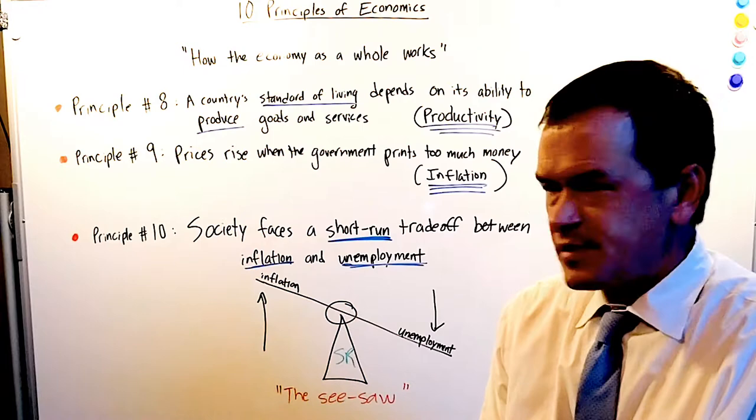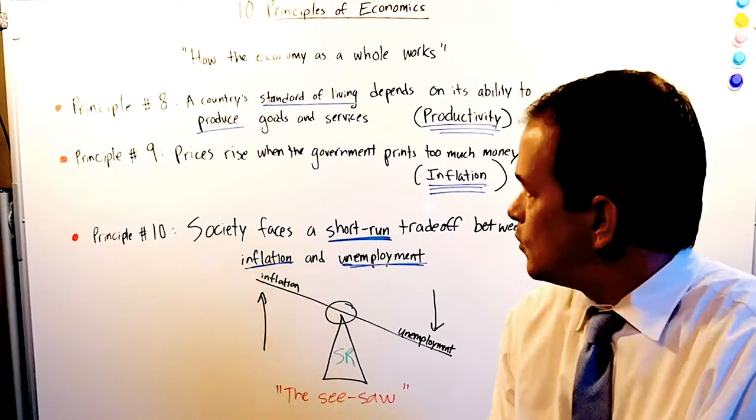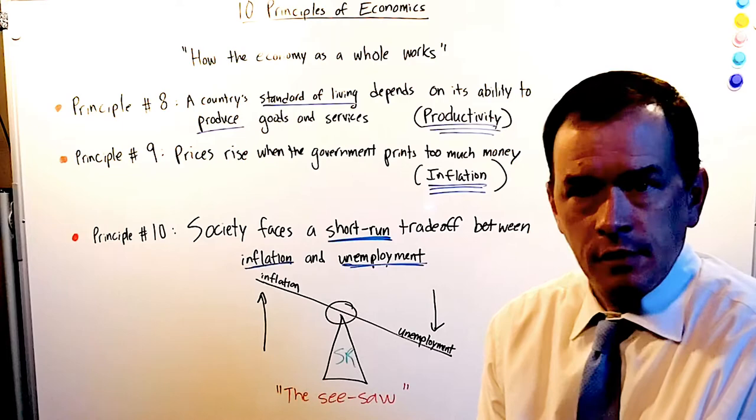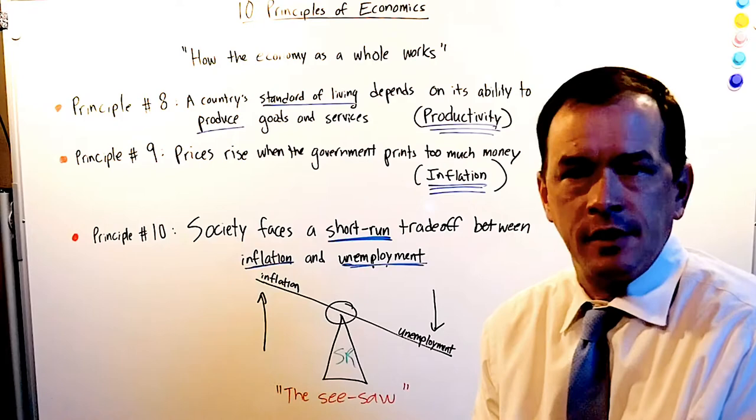The final category of the 10 principles of economics in Chapter 1 is how the economy works as a whole. No pun intended, we're taking a macro look. Chances are, if you're watching this video, you're starting with macroeconomics and it's a broad look at the entire economy.